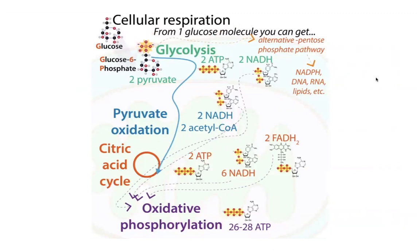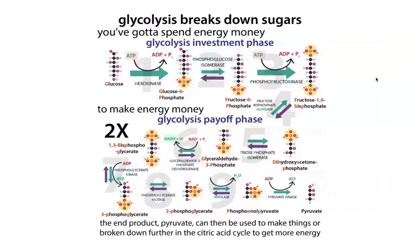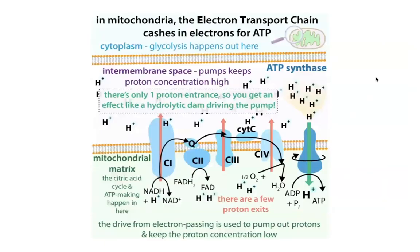What these have in common is you're doing a series of oxidation reactions. Oxidation is the loss of electrons. What's happening in these reactions is basically you're losing electrons that you're transferring onto molecules like NAD+ and FAD. Those are going to serve as carriers that carry those electrons through the electron transport chain in the mitochondria.